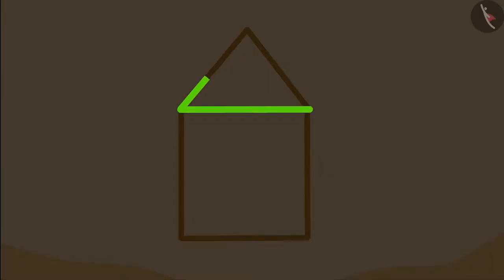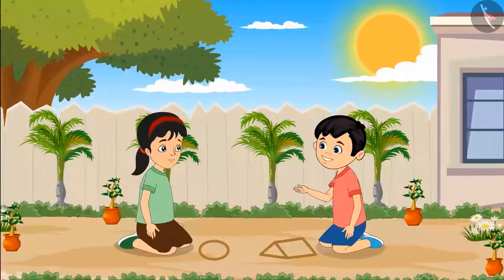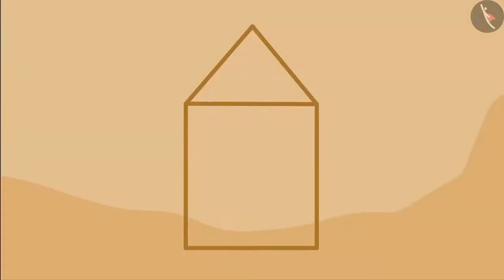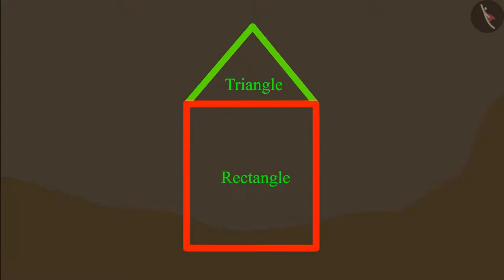This is a shape made of three sides. And this is a shape made of four sides. Yes, Pinky. Do you remember what ma'am told us yesterday? She told us that a shape made of three sides is called a triangle. And a shape made of four sides is called a rectangle.